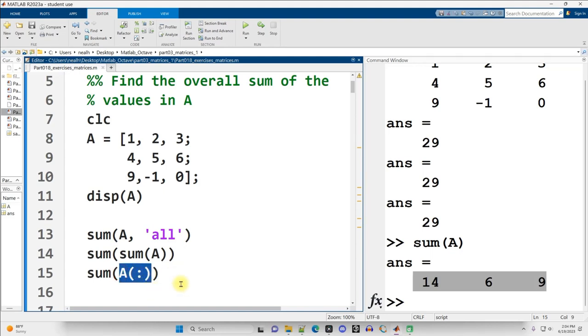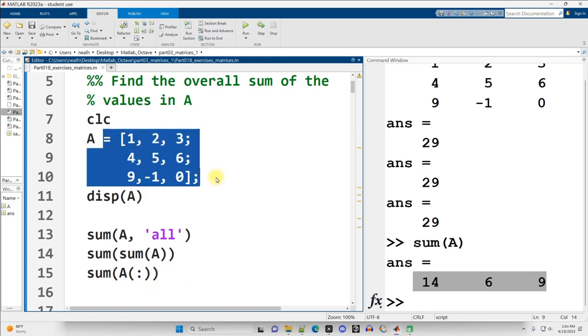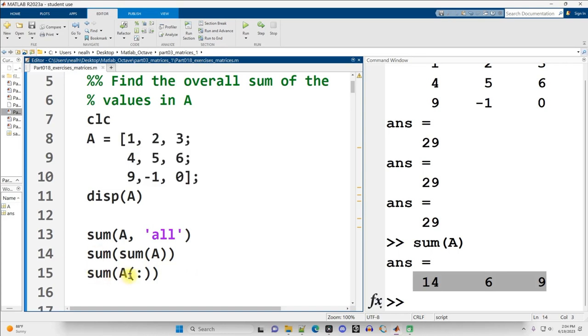So if I just ask for the sum of A, I'm going to get three separate values, one for each column. But if I take the sum of that, then I basically just get the overall sum. And finally, A parentheses colon is a way to convert a matrix into a column vector. It basically just stacks all the columns of the matrix on top of each other.